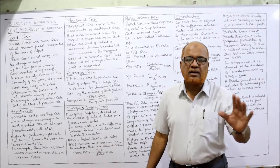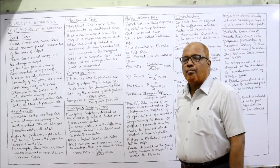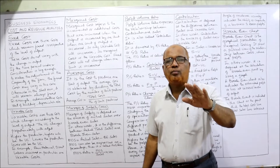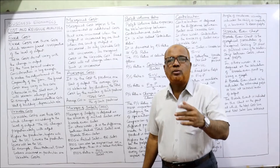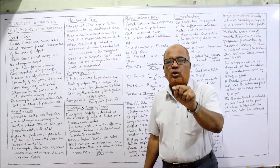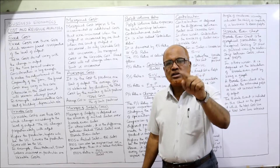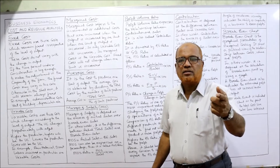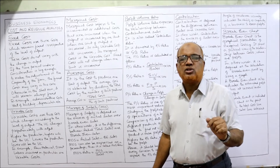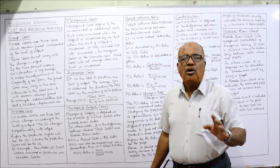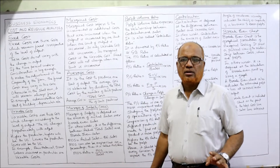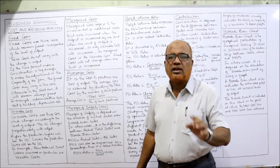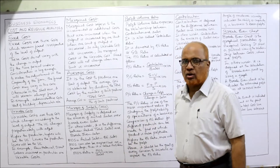Next is marginal cost. Marginal cost is the additional cost incurred when one unit of output is increased. When we increase the output by one unit, the increase in total cost is called marginal cost. In the short run, when we increase output by one unit, fixed cost will not change — only variable cost will change. So marginal cost is essentially the variable cost, since fixed cost does not change.